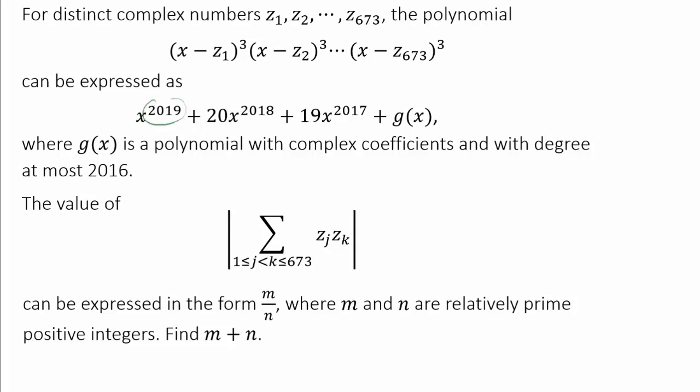Right away, we see, as we may have expected, 2019 pop up because we have x cubed 673 times, getting us 2019. And from the looks of it, it looks like we don't really have to worry about g of x. The information we need to finish the problem is all contained within the first three highest degree terms.